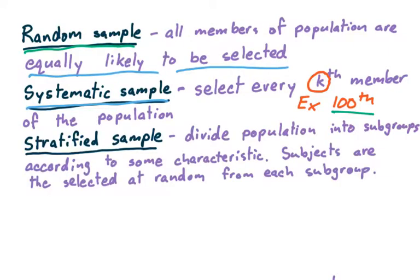In a stratified sample, what we do is divide the population into subgroups according to some characteristic, and then from there we randomly select members of each subgroup, and that forms our sample.